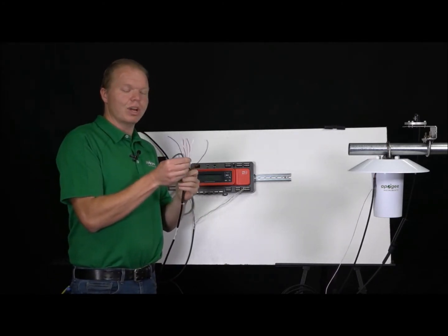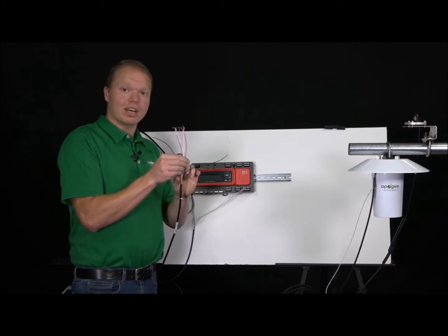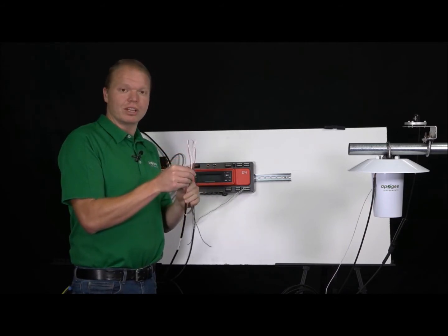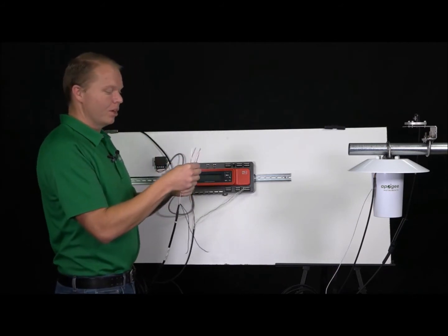Two black, two red, two white and a shield. For our application connecting to the SMA cluster controller, we'll just go ahead and bend down the black conductors because we don't need them. So if you want to trim them off, whatever your needs are.